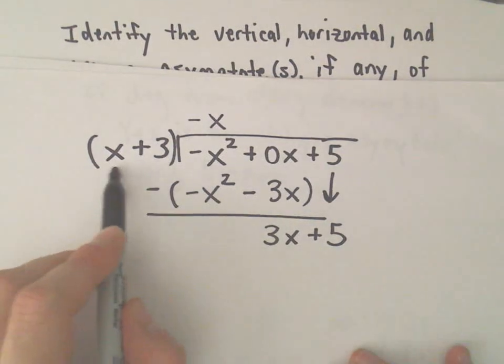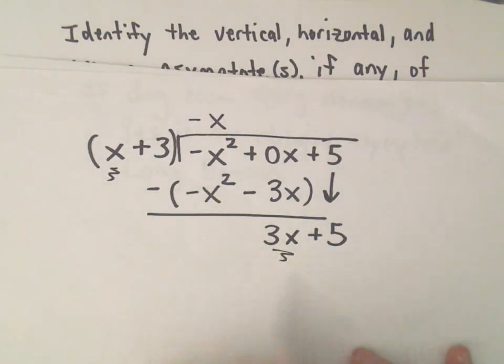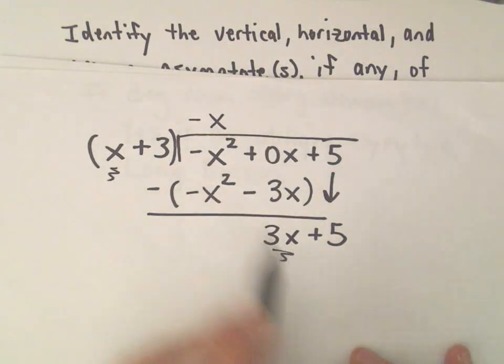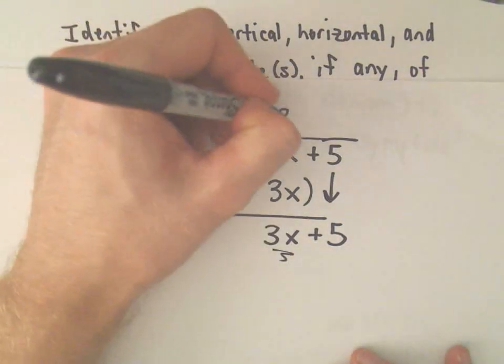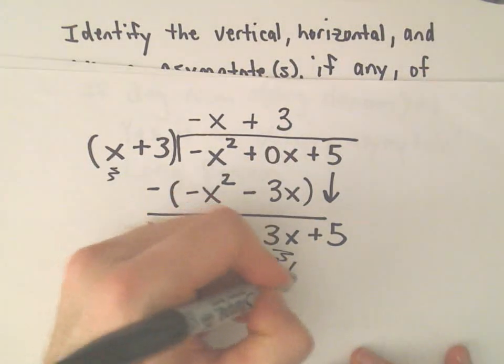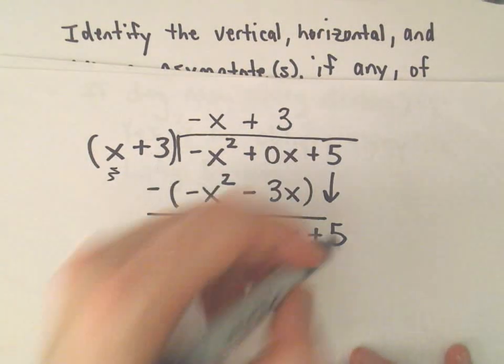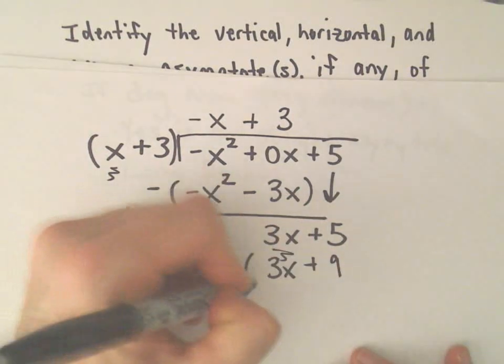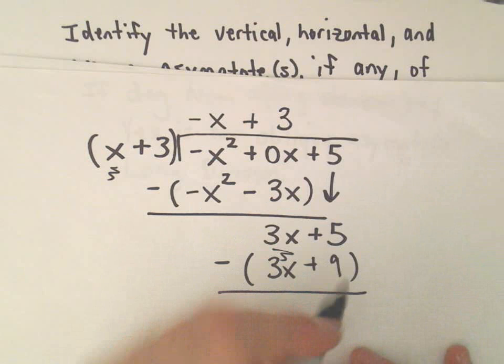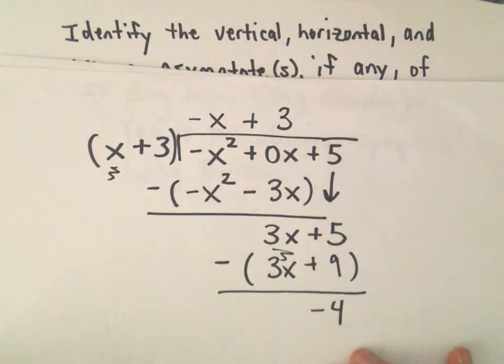So, now I do the same thing. I'm looking at the x and the 3x. So, I'm thinking x times what is positive 3x? Well, positive 3. So, we'll have 3 times x, which is 3x. 3 times 3, which is going to be positive 9. And again, we have to subtract. 5 minus 9 is going to be negative 4. And that's our remainder.